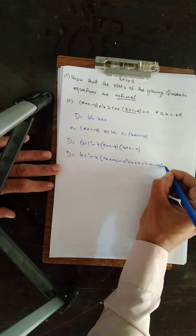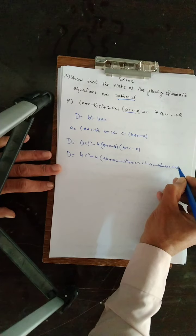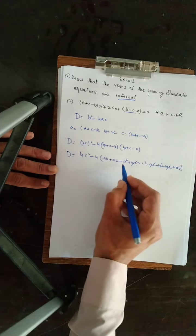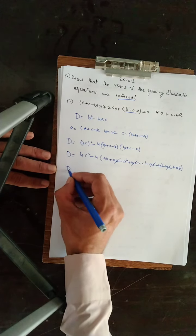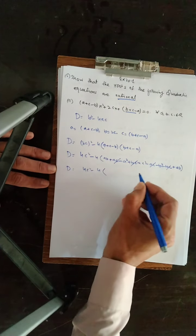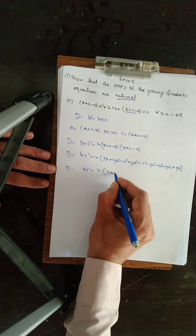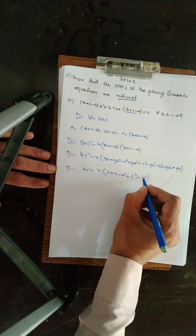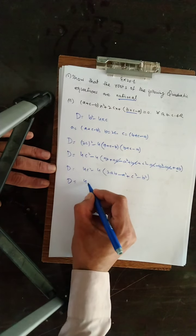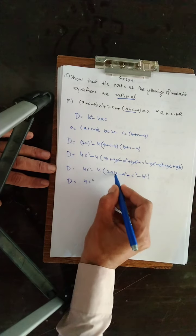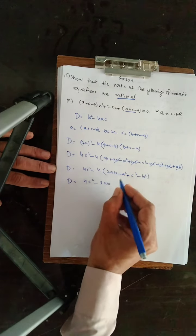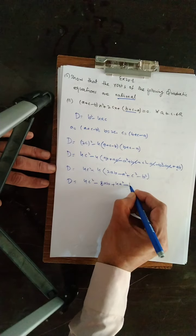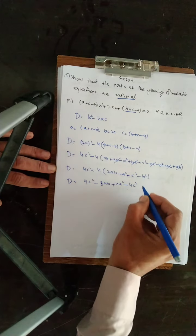Minus B کو C سے multiply کریں: minus BC، minus into minus سے plus B کو A سے multiply کریں AB ہوگا۔ جو terms cancel ہوں گی: BC plus کا اور BC minus کا cancel، AC minus کا اور AC plus کا cancel۔ باقی بچیں گے: plus 2AB، minus A²، minus B²۔ Minus 4 سے باہر multiply کریں: minus 4 کو 2AB سے minus 8AB، minus 4 کو minus A² سے plus 4A²، minus 4 کو minus B² سے plus 4B²۔